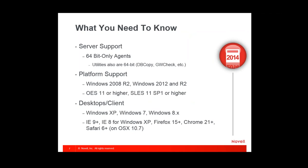Keep in mind the 64-bit requirement. All agents and server-side utilities — DB Copy, GWCheck, and any server-based utilities — are 64-bit. If you run GWCheck installed as part of the client, that's 32-bit, but anything server-based is 64-bit, meaning you need to be on a 64-bit OS. On Windows, that's not difficult since 2008 R2 and later are 64-bit only. On Linux, you need to be on SLES 11 or higher.